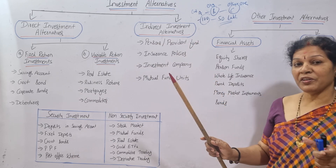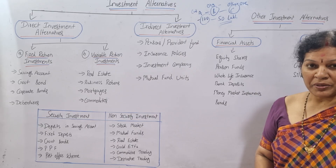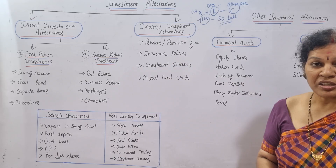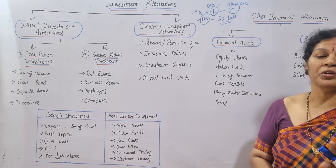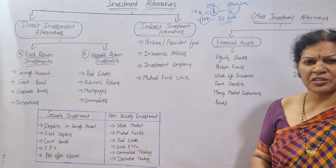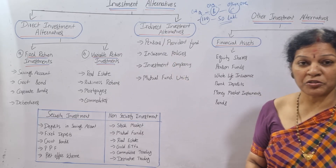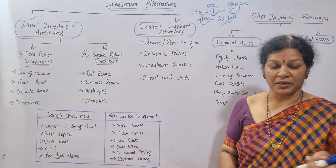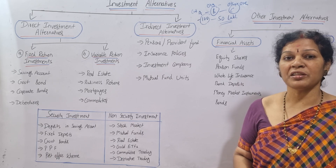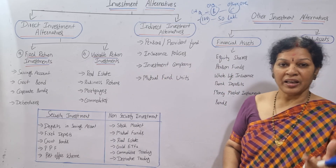What kinds of indirect investments are there? One is pension and provident fund — you contribute a portion of your salary towards pension and PF. This amount is utilized for some other purpose, but in return you receive interest or a consistent amount. Insurance policies are another example — every month or year you pay a premium, and that amount is utilized in other organizations.